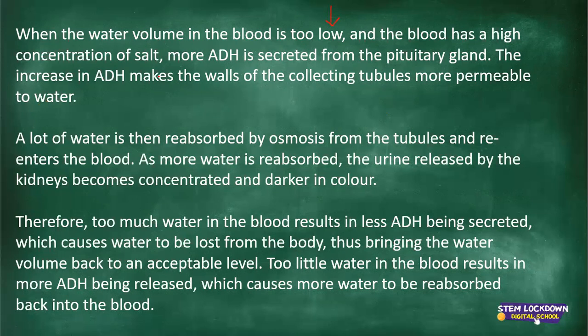More ADH is secreted. The ADH, which is the hormone, will always be directly proportional to the concentration of salt and inversely proportional to the concentration of water. So more ADH is secreted from the pituitary gland — the master gland. The increase in ADH makes the walls of the collecting tubules more permeable to water. Because of the high salt concentration, more water would be allowed in through osmosis so that it could balance out that concentration.